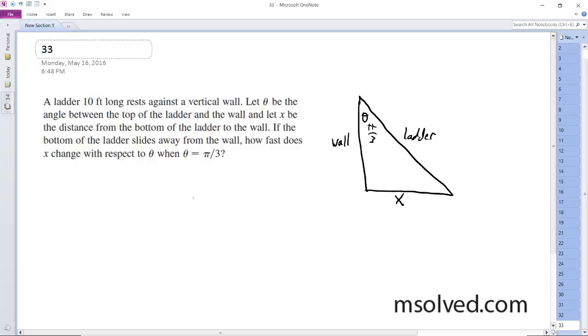So the equation for this is x changes at 10 times the sine of theta. So the ladder is 10 feet long. So it was originally sine of theta equals x over 10, and then we multiplied times 10. We got 10 sine theta equals x.